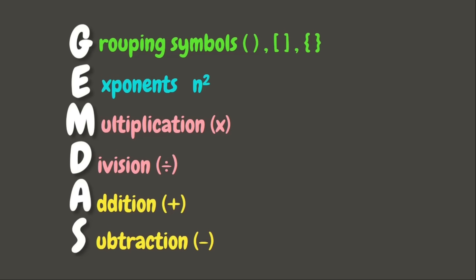And if division comes first before multiplication, we divide first. Lastly, we have Addition and Subtraction. Same as multiplication and division, we perform addition and subtraction as they occur from left to right. If addition comes first, we add first; if subtraction comes first, we subtract first. Now let's try to solve our problem.